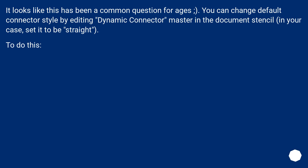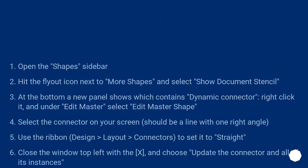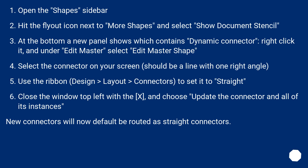To do this: open the shape sidebar, hit the fly-out icon next to 'more shapes' and select 'show document stencil.' At the bottom, a new panel appears which contains the dynamic connector. Right-click it and under 'edit master' select 'edit master shape.' Select the connector on your screen — it should be aligned with one right angle.